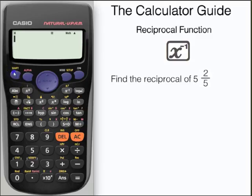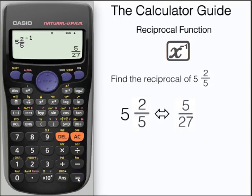You can also use the calculator to find the reciprocal of a mixed number. Input 5 and two fifths, then press the reciprocal button. Don't forget to use the replay button to navigate your cursor around the fraction. Press equals, and here we have our answer, 5 over 27.